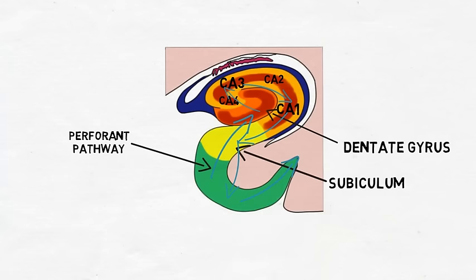Output fibers also leave the subiculum and hippocampus and enter the fornix, a fiber bundle that connects the hippocampus with a variety of subcortical areas like the thalamus and hypothalamus.